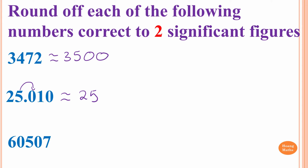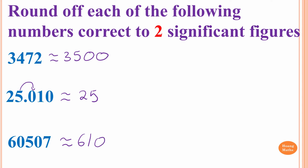These numbers — we count first and last, because they are both non-zero digits, so both are significant. Therefore, anything in between must also be significant. We count 1, 2, 3, 4, 5 — so 5 significant figures. We want 2: digits 6 and 0. Before we write 60, we check the number after 0, which is 5 — so we round up. Instead of 60, it becomes 61, giving us 61,000. So 60,507 becomes 61,000.